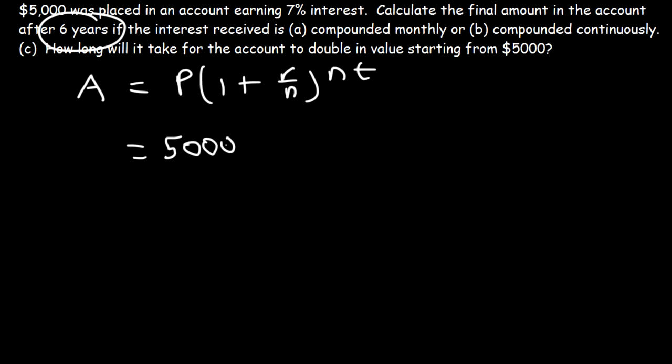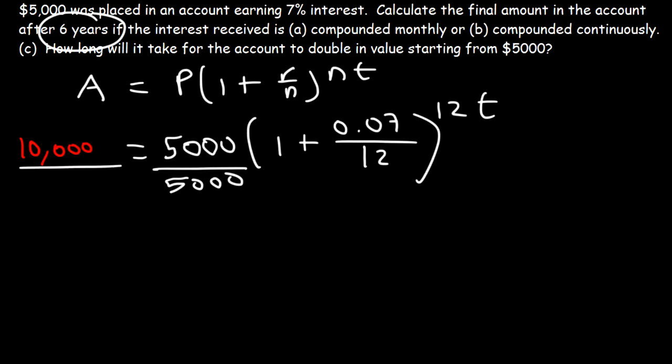A is equal to P times 1 plus R over N raised to the NT. So the principal is 5,000. Now the account is going to double in value. So if you multiply 5,000 by 2, it's going to be 10,000. R is still 0.07. If it's compounded monthly, N is 12. And we've got to find T this time. So the first thing we need to do is divide both sides by 5,000. 10,000 divided by 5,000 is 2. Now what I'm going to do is simplify this expression on the inside. 0.07 divided by 12 plus 1. That's about 1.00583. And that's raised to the 12T.